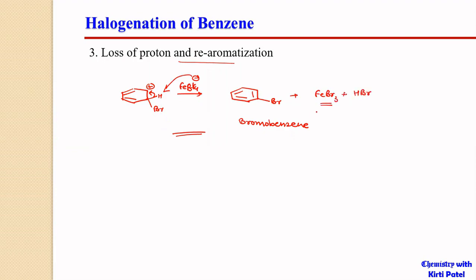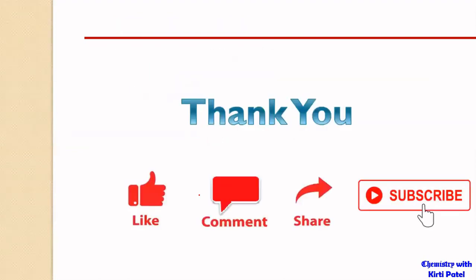FeBr3 can then pick up another bromine molecule and carry out the reaction again, so it catalyzes the next cycle. This completes our halogenation reaction. Thank you.